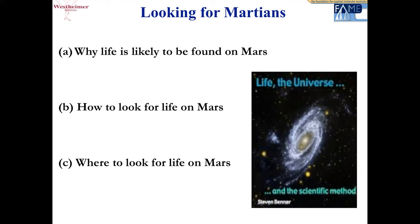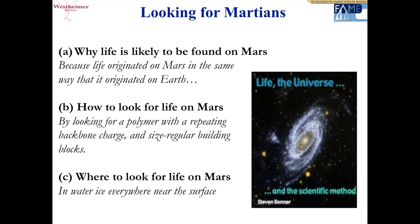I'm going to try to go through three general topics here — why life is likely to be found on Mars, how to look for life on Mars, and where to look for life on Mars. The short answers: life is likely to be found on Mars because life likely originated there the same way it originated on Earth. How to look — by looking for a polymer with a repeating backbone charge, either positive or negative, with size-regular building blocks. Where to look — water ice, which is everywhere near the surface.